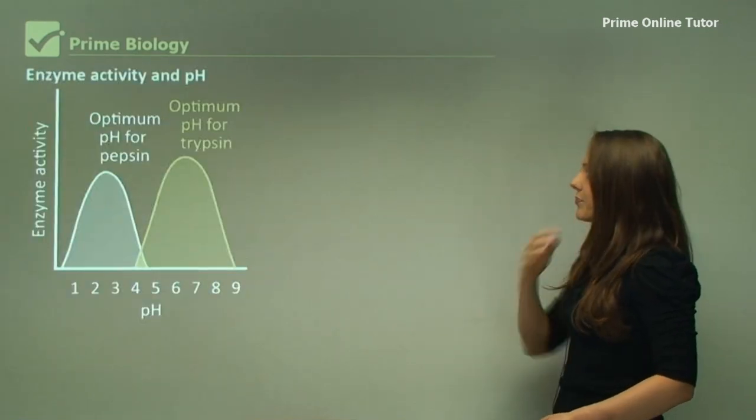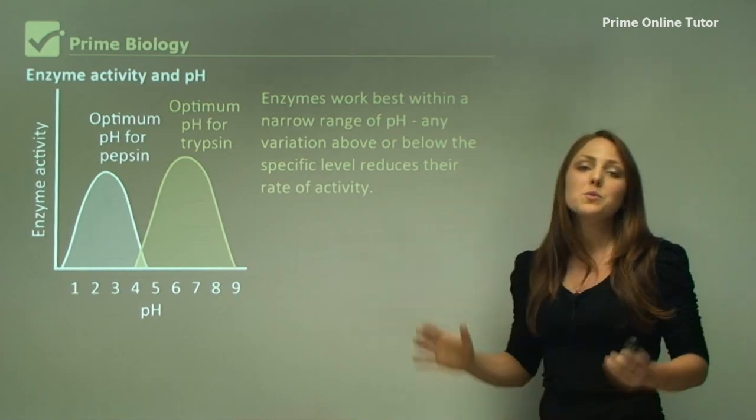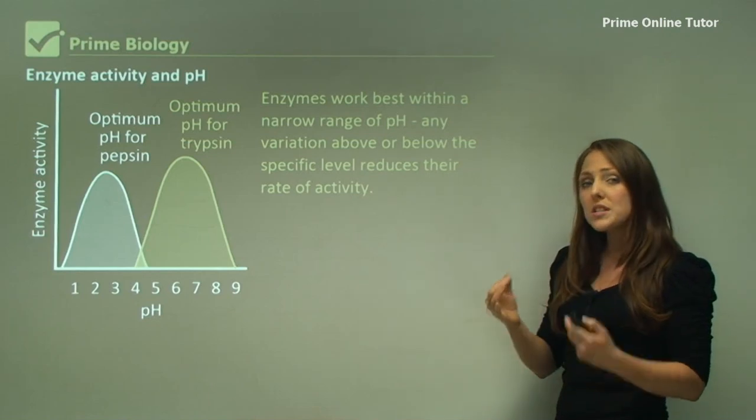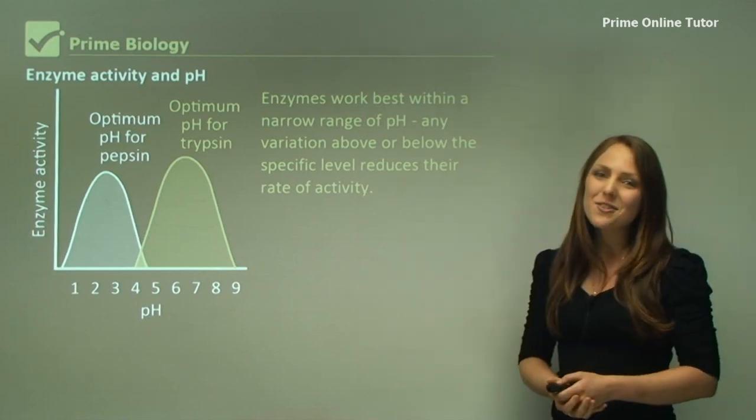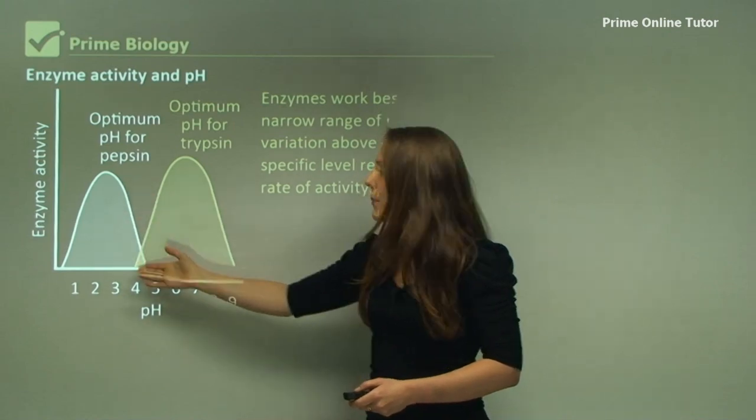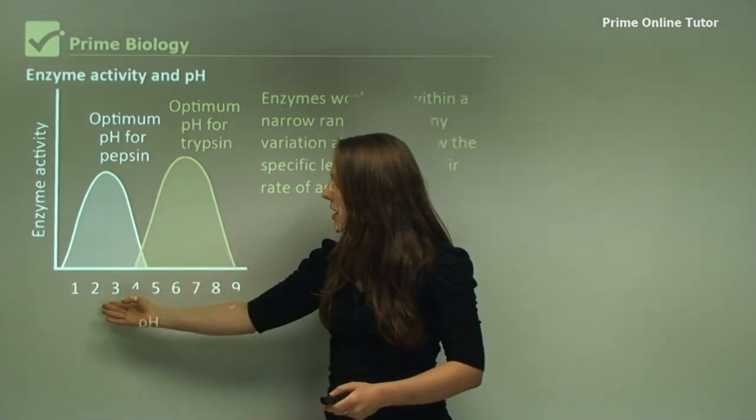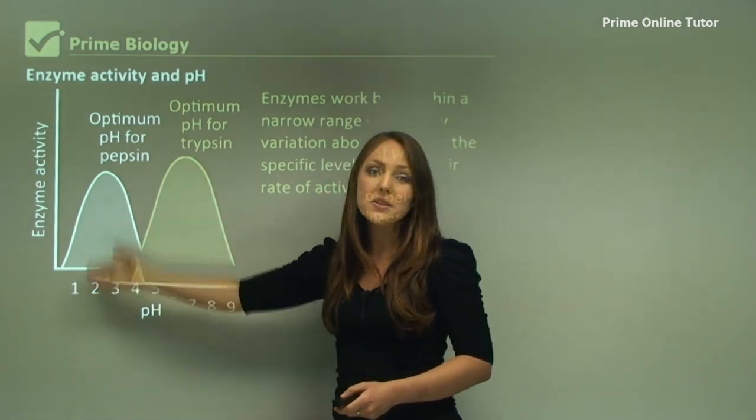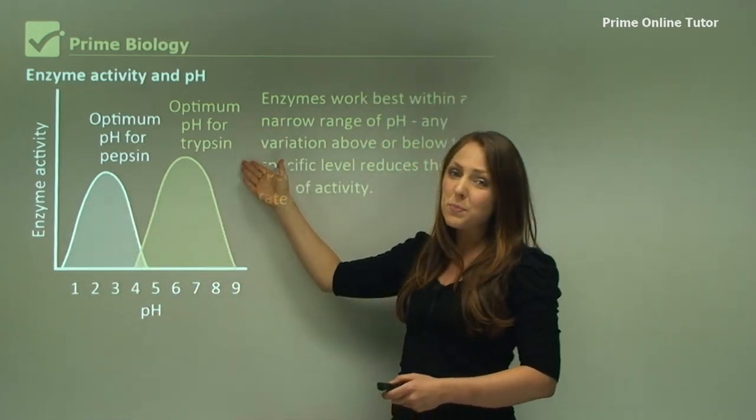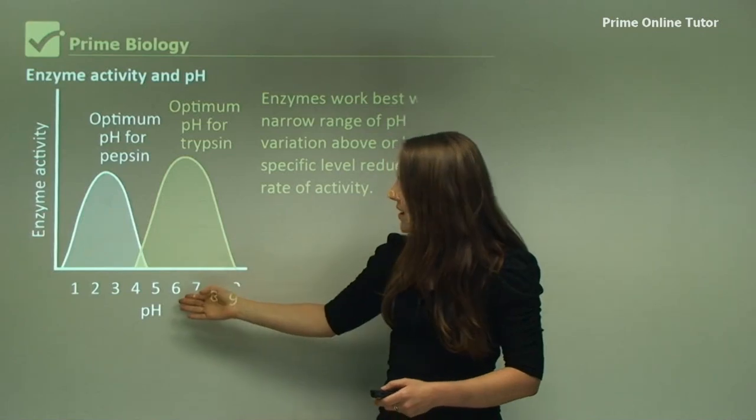Enzymes work best with a narrow pH range. Any variation above or below a specific level reduces their rate of activity. As you can see here, the pH for pepsin - pepsin works best at around the level of 2, so it's a very acidic pH - whereas an optimum pH for trypsin works at around about 6 to 7.